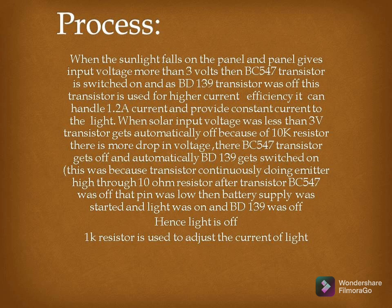When sunlight hits the panel and the panel gives an input voltage more than the threshold, the BC547 transistor turns on and the BD139 transistor turns off. The BD139 transistor is used for higher current and efficiency — it can handle 1.2 amperes of current and provides constant current to the light. When the solar input voltage drops below the threshold, the BC547 transistor automatically turns off because the 10K resistor drops the voltage.